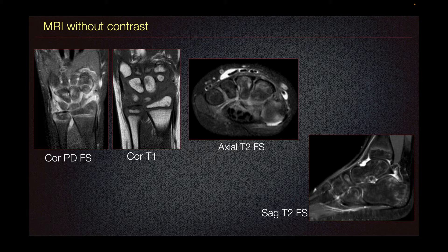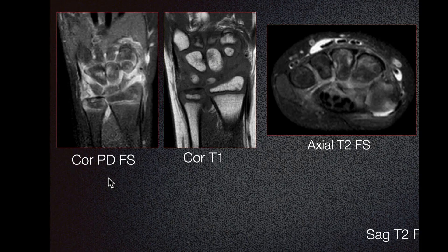MRI is the most sensitive modality to detect synovitis, and in some cases contrast is needed to accurately differentiate active synovitis from non-inflammatory joint effusion. It is also the only modality that can detect bone marrow edema, which is another indicator of inflammation.